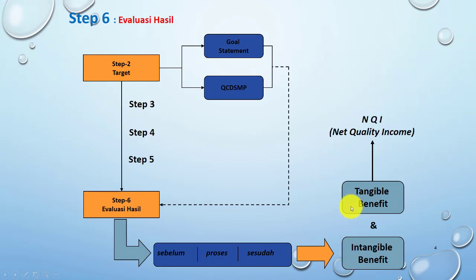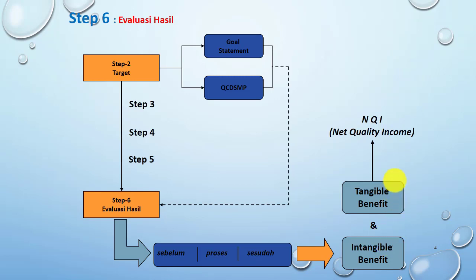Hasil dibedakan menjadi dua, yaitu Intangible Benefit — artinya manfaat yang tidak dapat diukur dengan kuantiti — dan yang kedua adalah Tangible Benefit, atau keuntungan yang dapat diukur dan dapat diperhitungkan, contohnya adalah Net Quality Income.